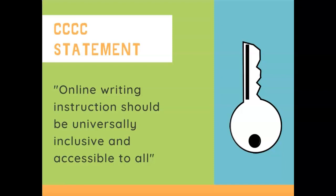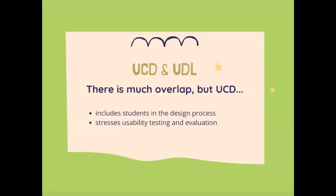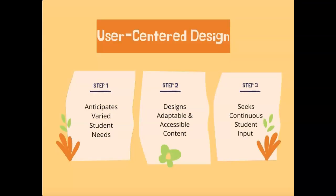A lot of the discussion about accessibility falls under the user-centered design philosophy, which focuses on how students will want to, will need to, and will likely access content. User-centered design and universal design for learning have a lot in common, but two key differences are that UCD includes students in the design process and stresses testing and evaluation. There are three main steps to effective user-centered design: anticipating student needs, designing accessible content to meet those needs, and seeking continuous student input.